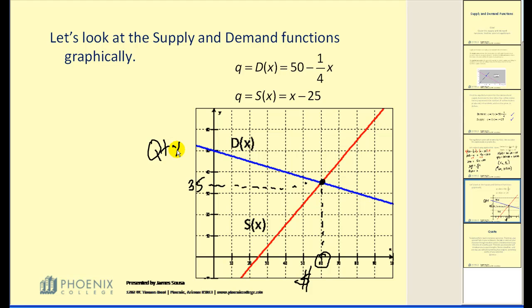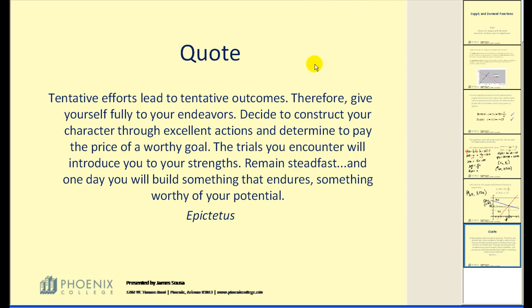But of course, this is quantity in the hundreds. So it does verify a price of $60 and a quantity of 3500 coffee makers. I hope that helps explain and review how to find the equilibrium point given the supply and demand functions. Thank you.